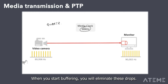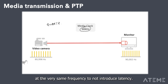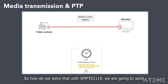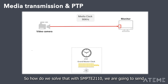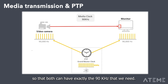The solution is to implement a buffer — buffering will eliminate these drops, however it will increase latency. This is why it's very important for two systems to operate at the very same frequency. With SMPTE ST 2110, we send both receiver and sender the same clock so that both can have exactly the 90 kHz needed.